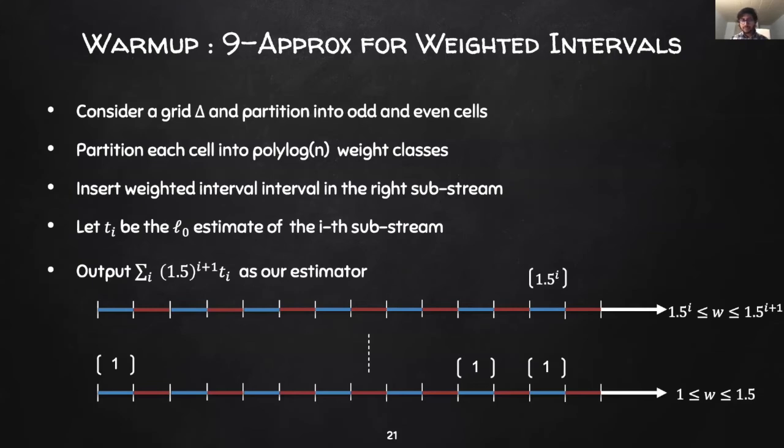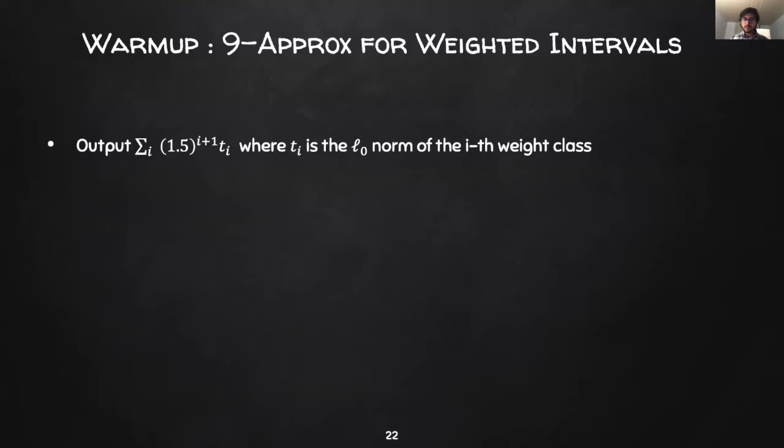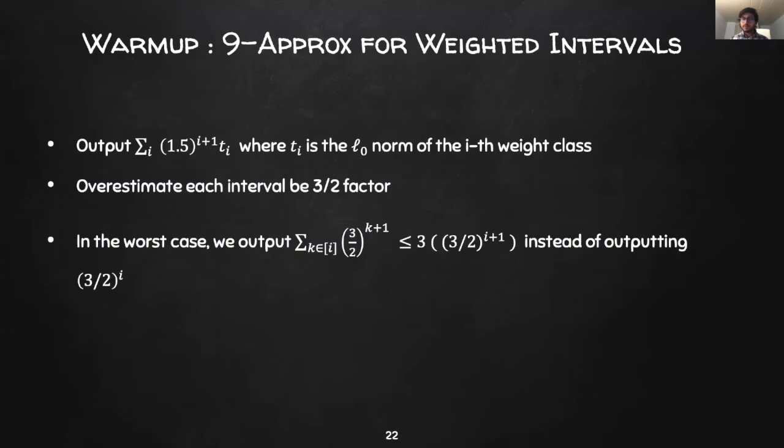Observe, for a particular interval, we round up its weight by a factor of at most three halves. Further, for a particular cell that is non-empty, ideally we would like to pick the maximum weight interval snapping to the cell. A priori, we do not know which weight class contains the max weight interval and thus we use the sum of the geometrically increasing weights as our proxy.